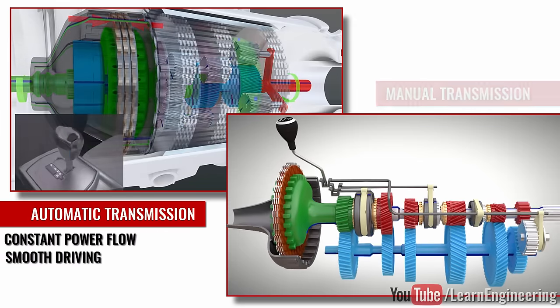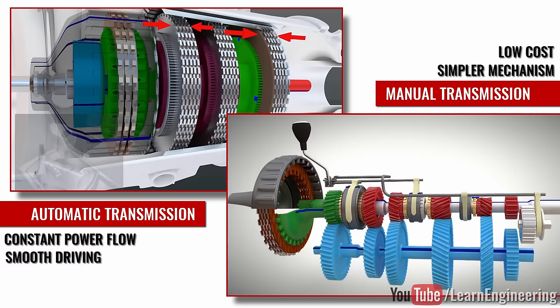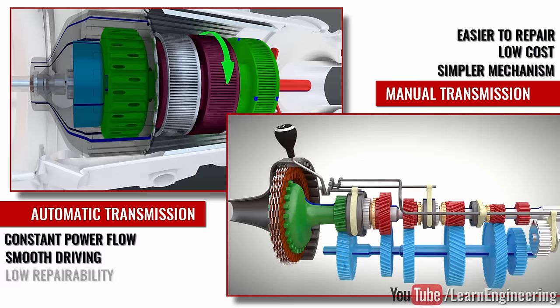It is clear that the manual transmission technology is much simpler than the automatic. It has fewer components and is easier to repair. On the other hand, automatic transmission is a tightly packed arrangement.